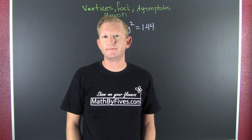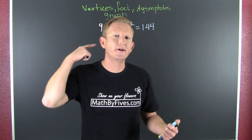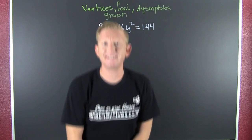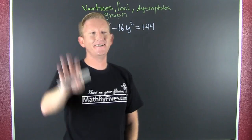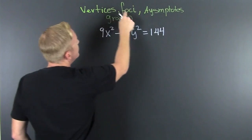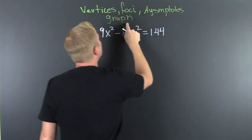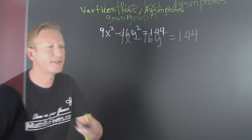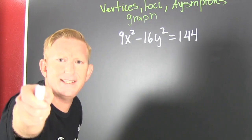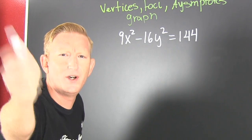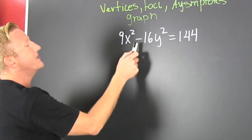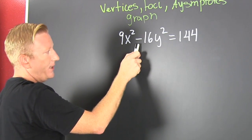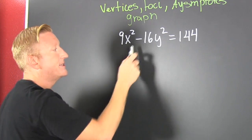I apologize if you can hear the gardeners in the background, but we're trying to plant the idea for finding vertices, foci, asymptotes, and graphs. First we need to fit the form — what form? It needs to be equal to 1. It's a hyperbola because of that minus sign.